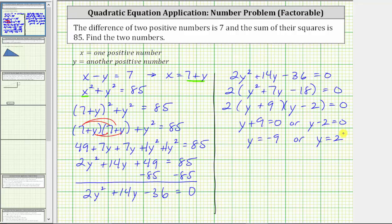But notice how we were told that the two numbers are positive, and therefore we can eliminate the solution of y equals negative nine. We now know that y is equal to positive two, and we know x is equal to seven plus y, and since y is equal to positive two, we know x equals seven plus two, or x equals nine. So now we know the two positive numbers are two and nine.